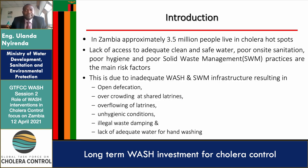About 3.5 million people in Zambia live in cholera hotspots. This is attributed to lack of access to adequate clean safe water, poor sanitation, poor hygiene, and poor waste management practices. As a result, we find situations of open defecation, overcrowding at shared latrines, overflowing of latrines during floods, poor hygienic conditions, illegal waste dumping, and lack of adequate water for hand washing.